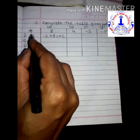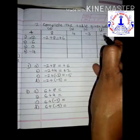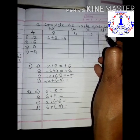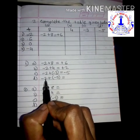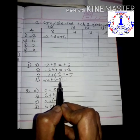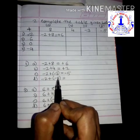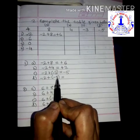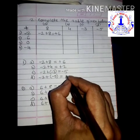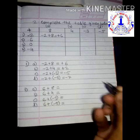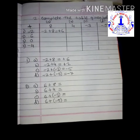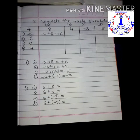D: minus 2 plus minus 5. Again, both integers have the same sign. Add them: 5 plus 2 is 7, and give the common minus sign — the answer is minus 7. That completes the first row for minus 2.